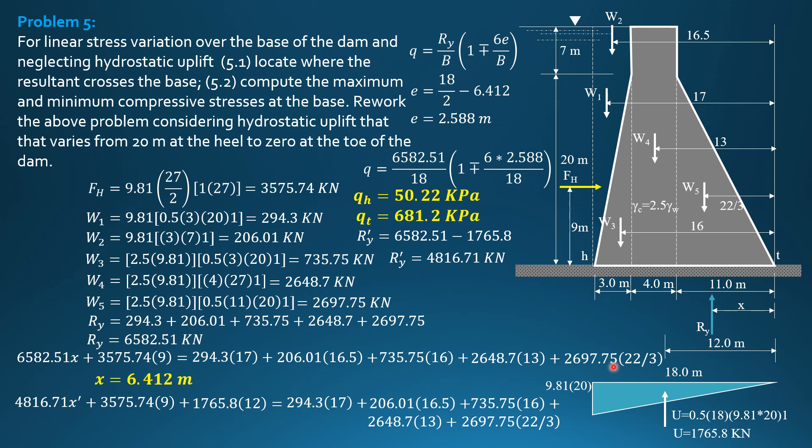So using your calculator there, X prime is equal to 4.364 meters. So it falls outside. It is now closer to the toe. So there is a portion on this side here that is not compressed.